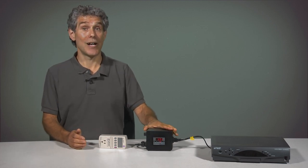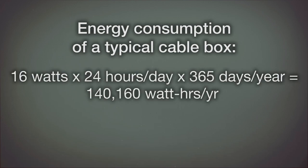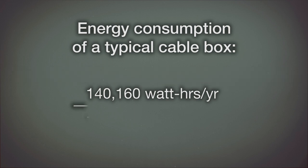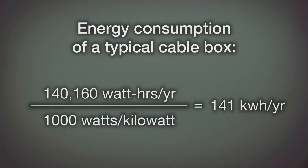It uses 16 watts whether it is on or off. This is a phantom load. In a year, this cable box uses 16 watts times 24 hours per day times 365 days per year equals 140,160 watt hours per year, divided by 1,000 watts per kilowatt, equals 141 kilowatt hours per year.